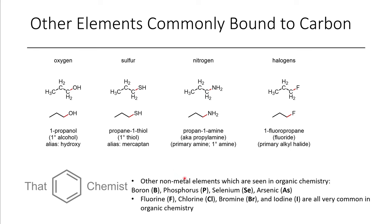These are the main elements you see bound to carbon: halogens including chlorine, bromine, and iodine. In contemporary organic chemistry it's also common to see boron, phosphorus, selenium, and occasionally arsenic. Aside from transition metals and some other metals, these are the main things you'll encounter, and metals tend to only exist as transient intermediates — though that's a bit of an oversimplification.